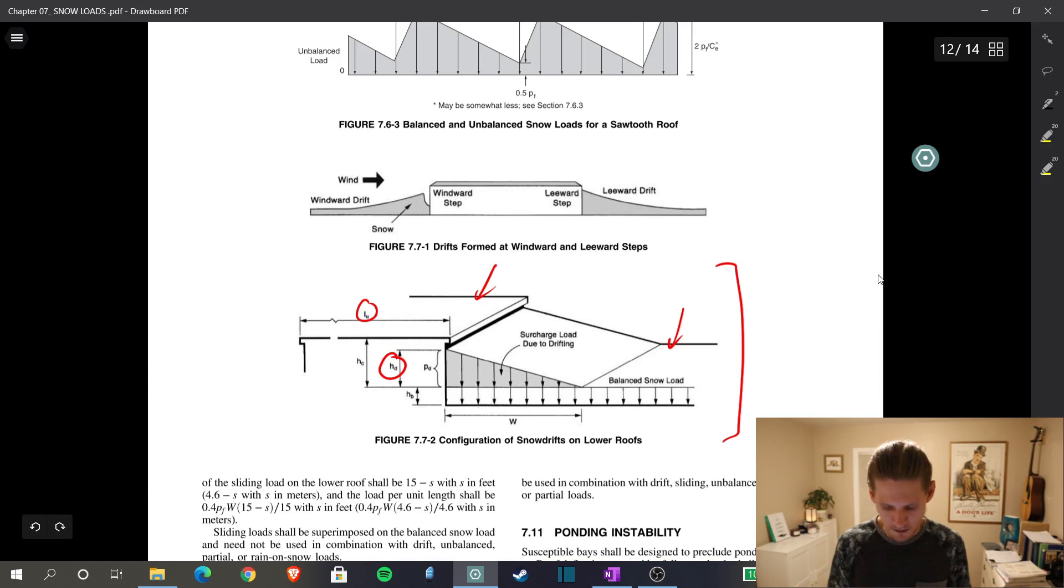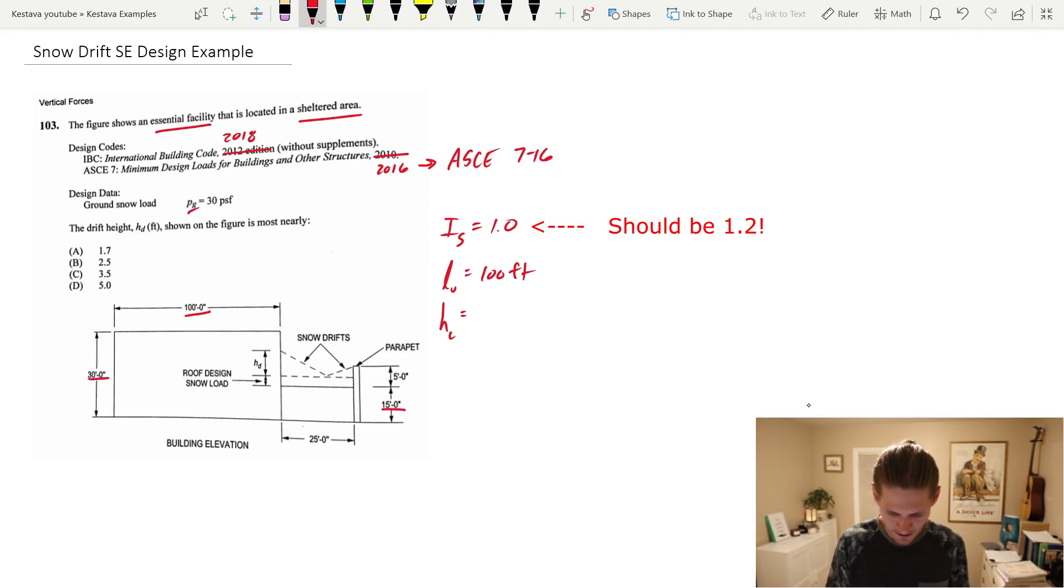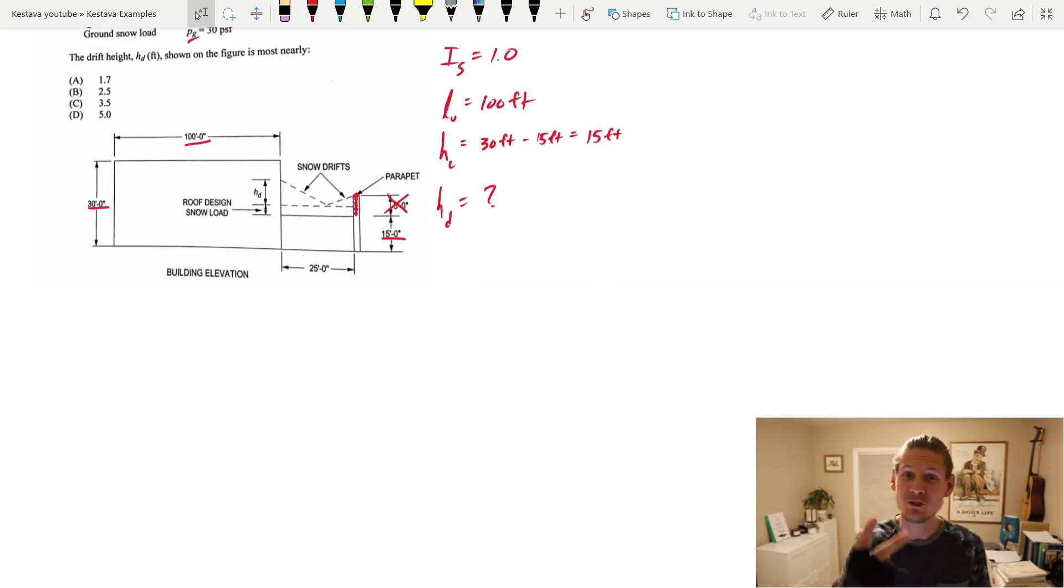From our actual problem, we need to find h sub d. That's what we're tasked with finding. So back in 7.7.1, snow that forms drifts comes from a higher roof or with the wind from the opposite direction from the roof on which the drift is located. These two kinds of drifts, leeward and windward, are shown in figure 7.7-1. The geometry of the surcharge load due to snow drifting shall be approximated by a triangle as shown in figure 7.7-2. L sub u, which is the length of the upper roof. There's h sub c, which is the height difference between the low roof and the high roof. L sub u is 100 feet. H sub c, we have a 30 foot high tall building and then we have a 15 foot high short building. Ignore this parapet. This five foot parapet here. You don't get to include that in the difference of your roof heights. And h sub d is our unknown.